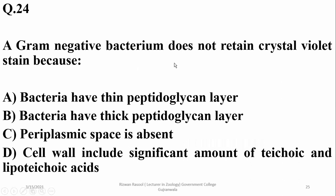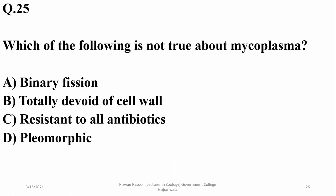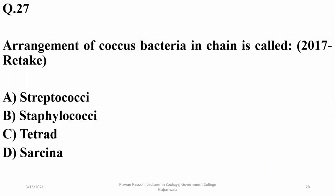A gram negative bacterium does not retain crystal violet stain because it has a thin peptidoglycan layer compared to gram positive bacteria. Mycoplasma is totally devoid of a cell wall, it is pleomorphic, and it divides by binary fission, but it is not resistant to all antibiotics. Bacteria that cannot grow in the presence of oxygen are strict anaerobes, and the arrangement of coccus bacteria in a chain is called streptococcus, so alpha.